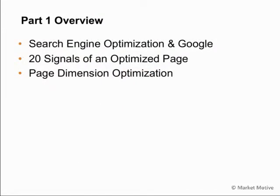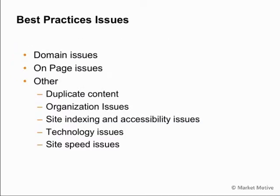This is a multi-part series, and we're going to look at how Search Engine Optimization really is just mainly about Google. We're going to also look at 20 signals of an optimized web page and some of the page dimension optimization techniques in the first part of this series. Over the series, we're going to look at the best practices issues for the domain, for the page, and for what I like to call the other dimension — being duplicate content, organizational issues, site indexing and accessibility, technology, and site speed issues.